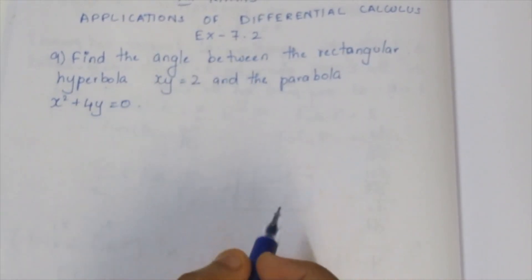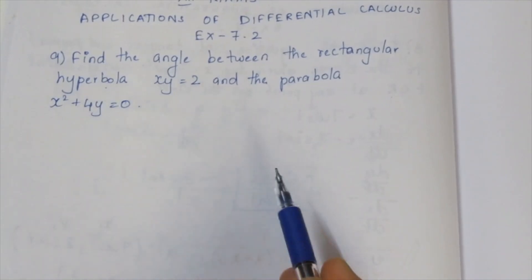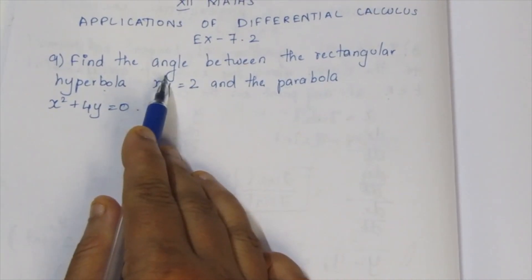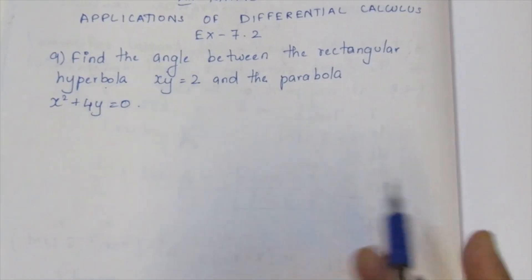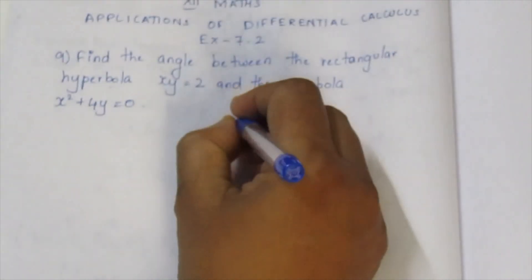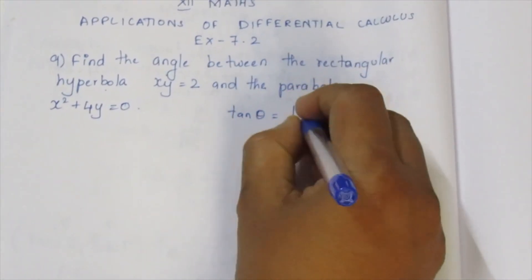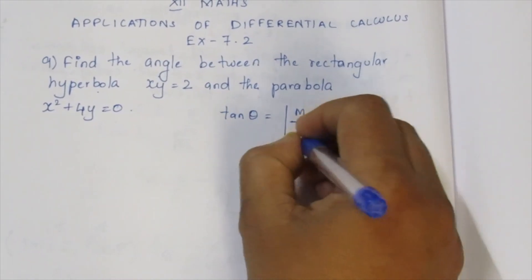We have the equations for the hyperbola and the parabola. To find the angle between the curves, we use the slope formula. The angle theta is given by: tan θ = |m1 - m2| / (1 + m1·m2).